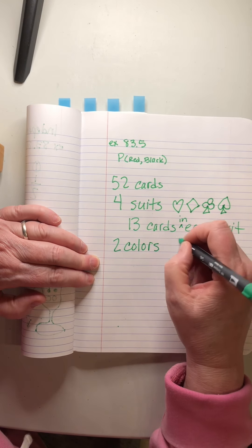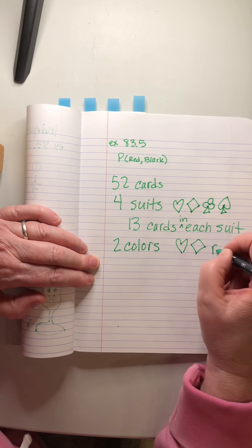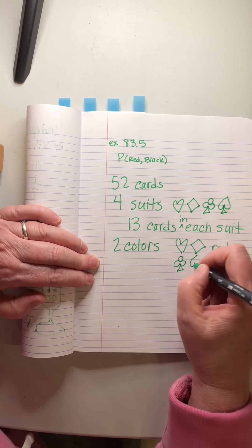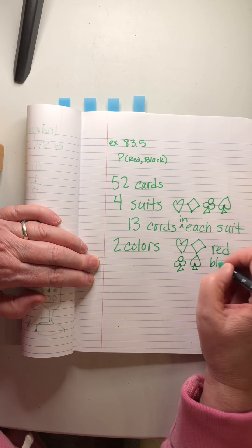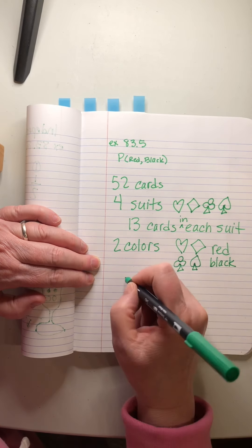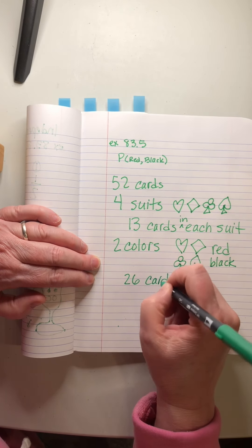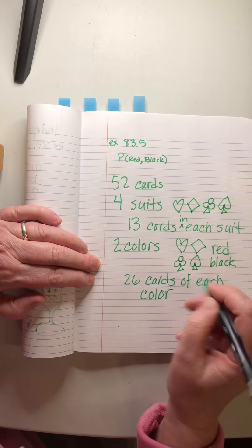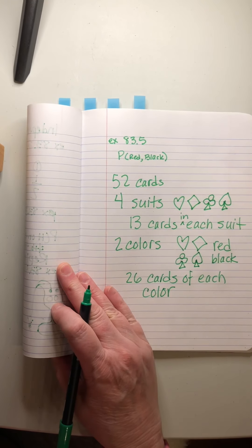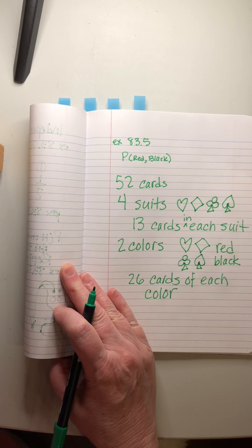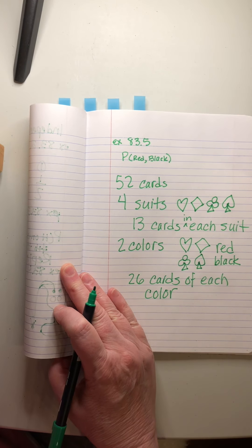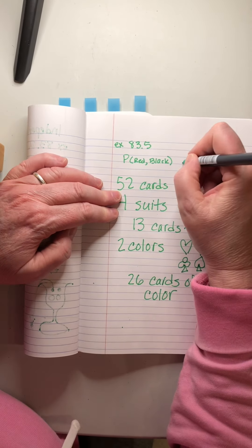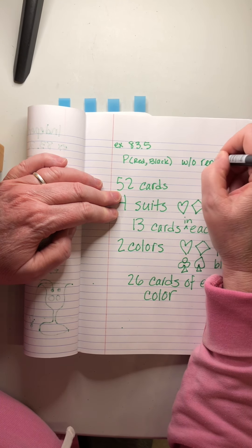52 divided by the four suits is 13 cards in each suit. Now there's two colors. Hearts and diamonds are red, clubs and spades are black. That means there are 26 cards of each color. That's a quick review on how cards work.